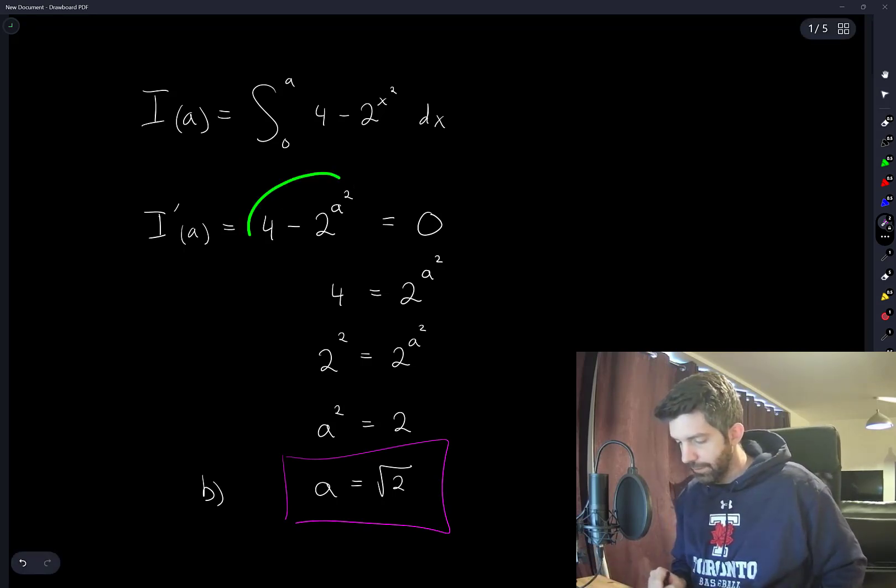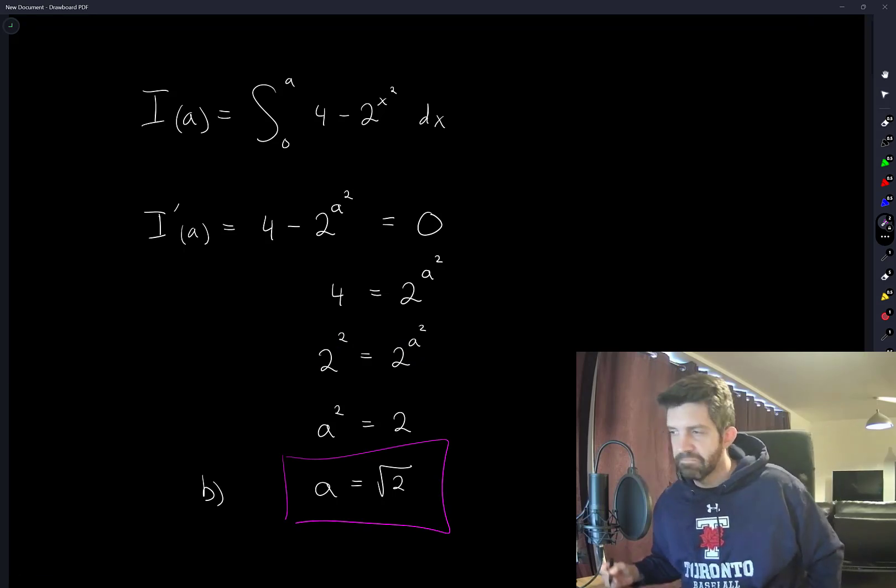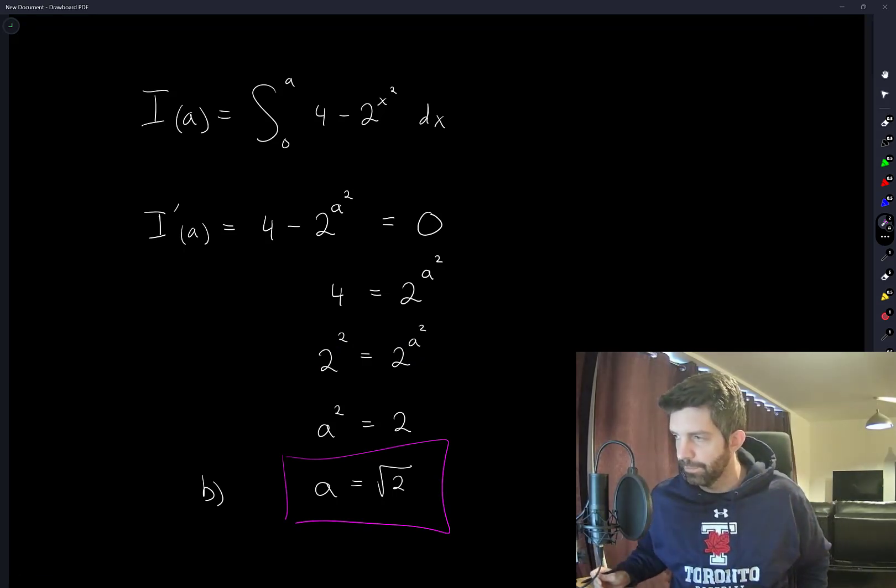And then just solving this equation for a, helps to write everything in terms of the base 2. And then you just have to make the exponents the same. It kind of falls out pretty easily from there. If I have more to say about this one, I'll write it down in the description. Thanks for watching.